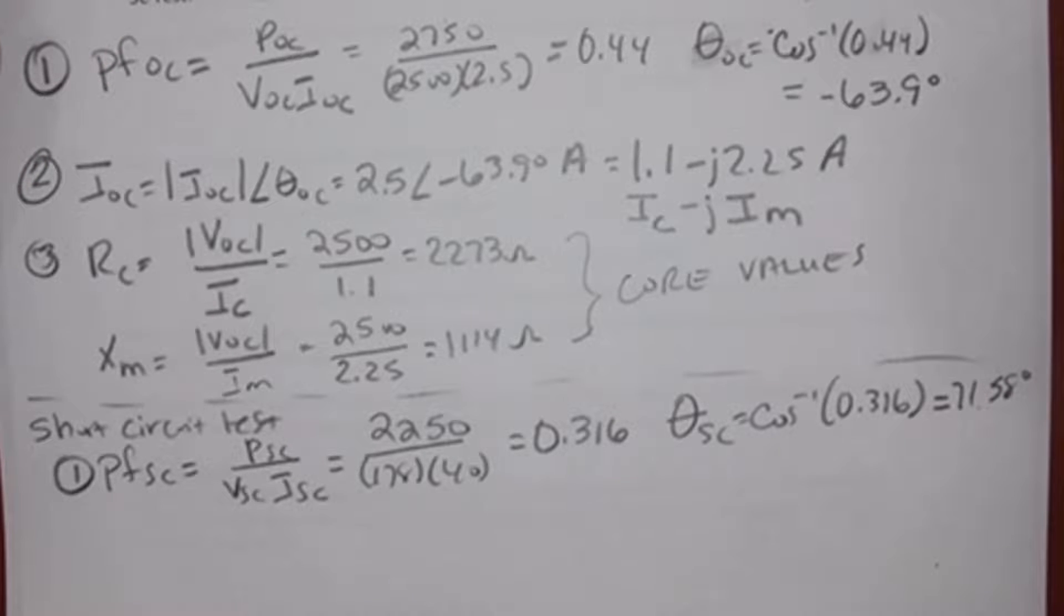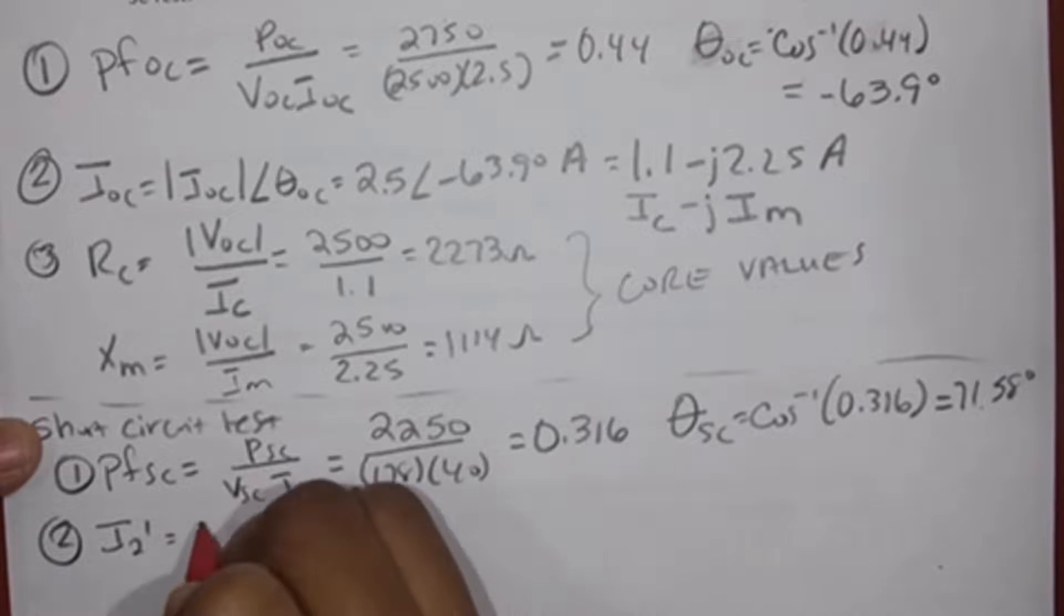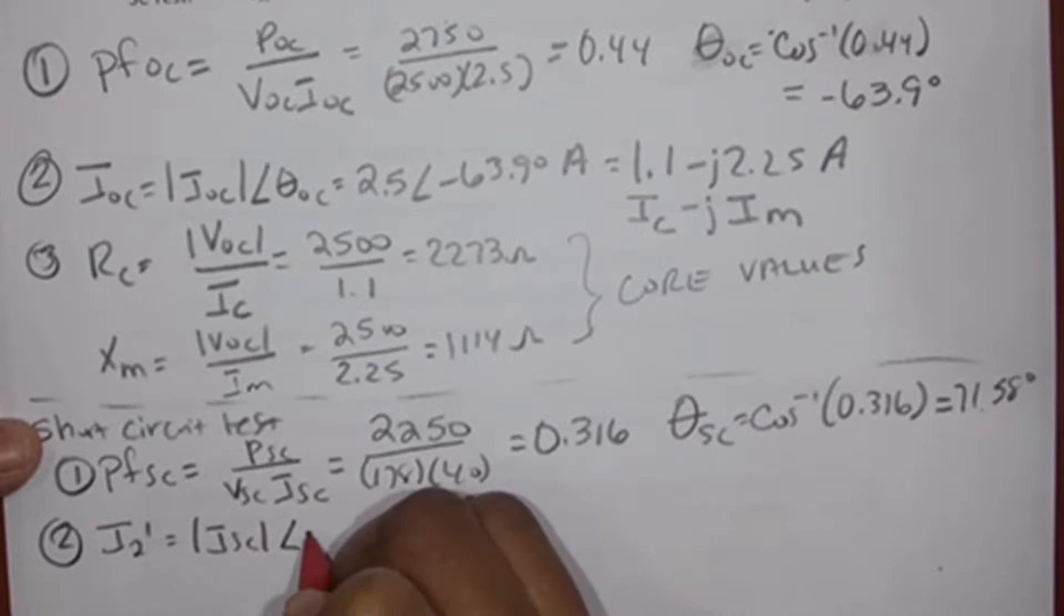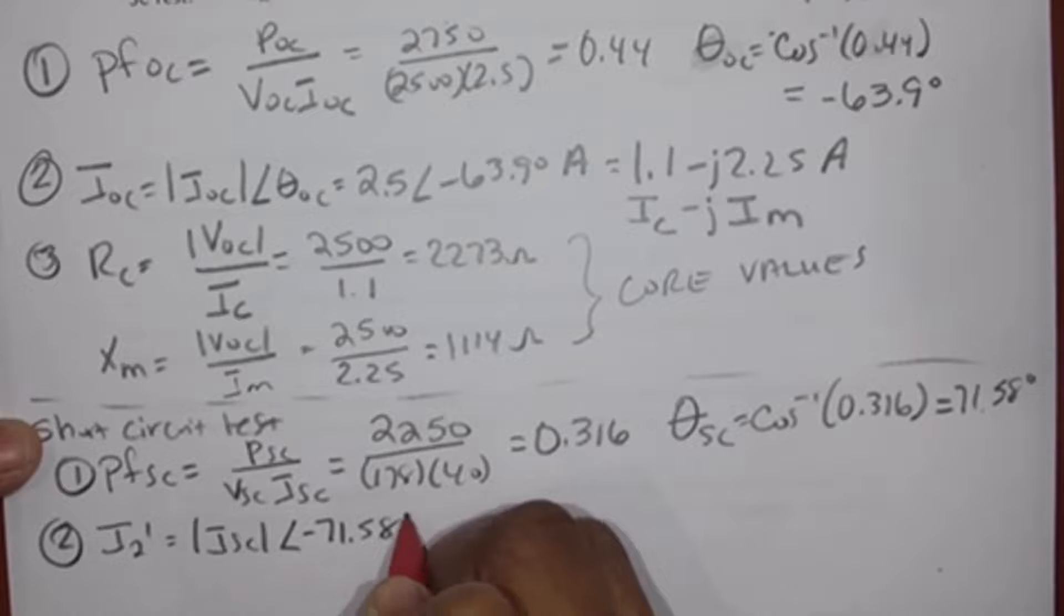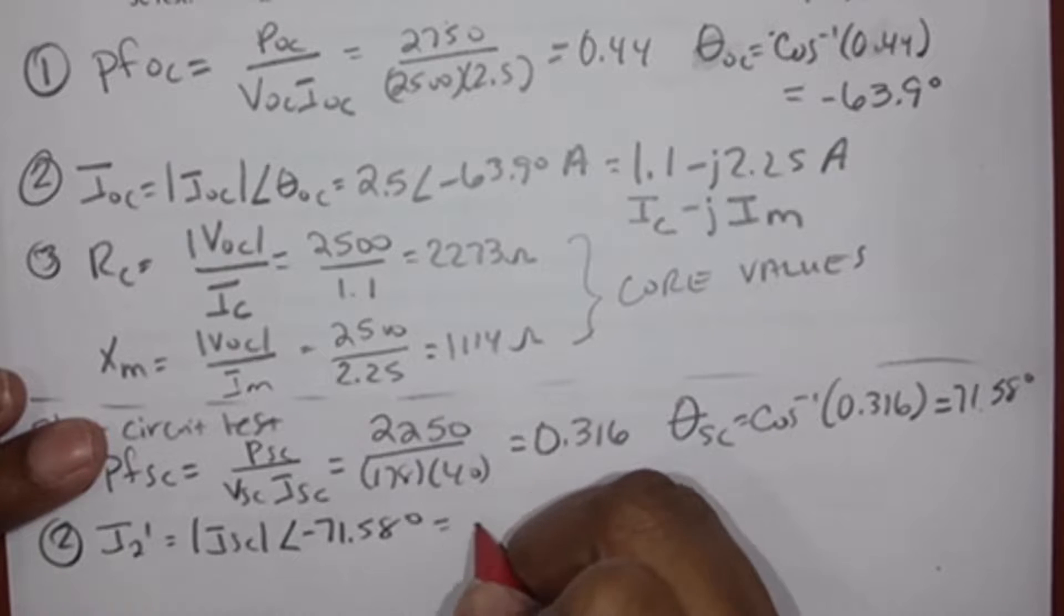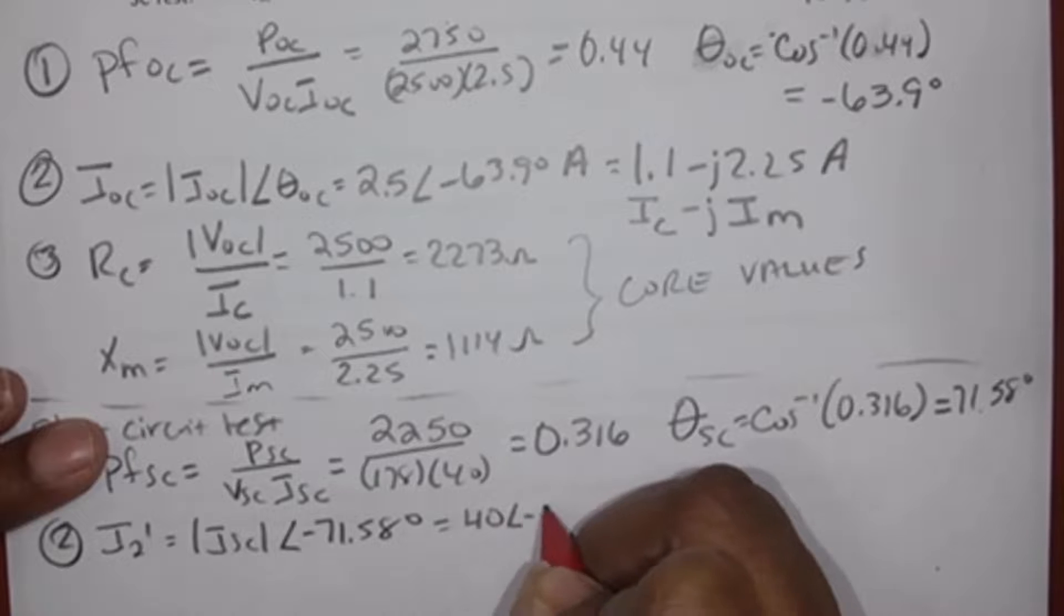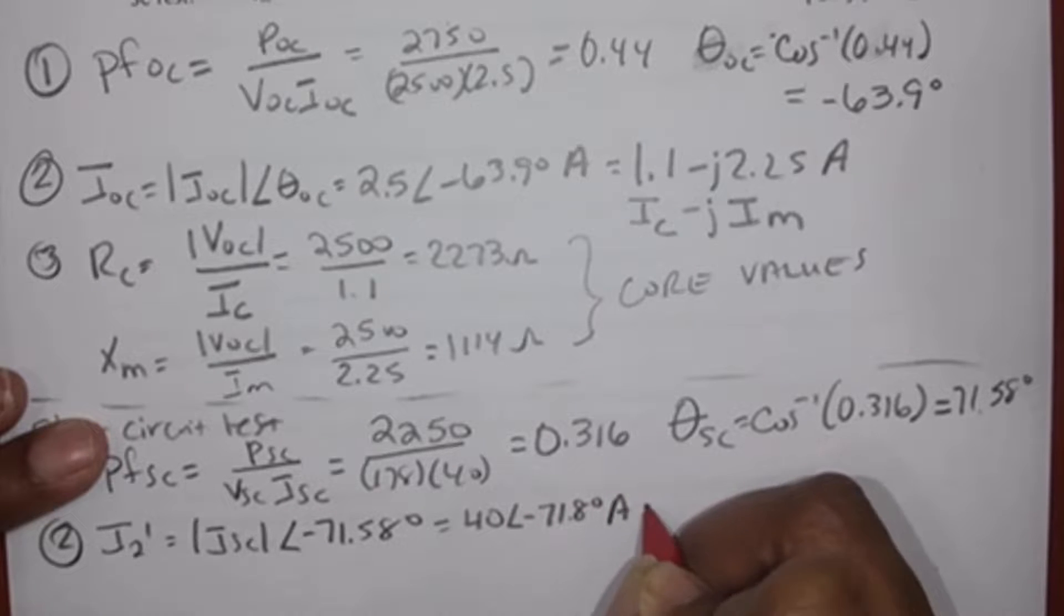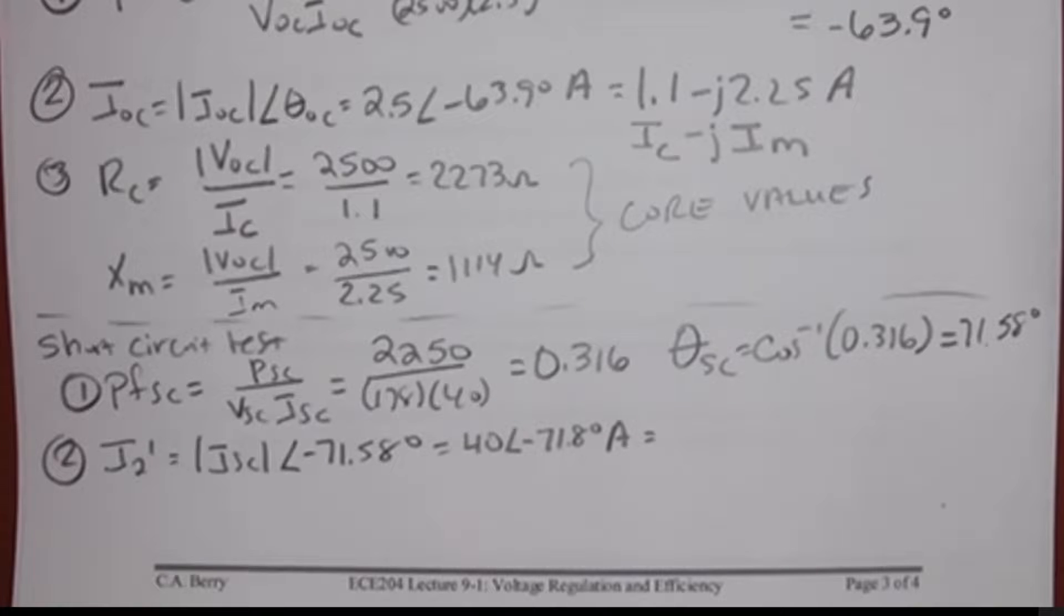Remember, we're going to flip the sign for the current. So for the current, this is going to become step two. I2 prime equals the magnitude of ISC with the angle negative 71.58 degrees. So I2 prime is 40 with an angle of negative 71.58 degrees in amps. For this one, we don't have to actually change that to rectangular form because we don't use it. We just need to find Z next.